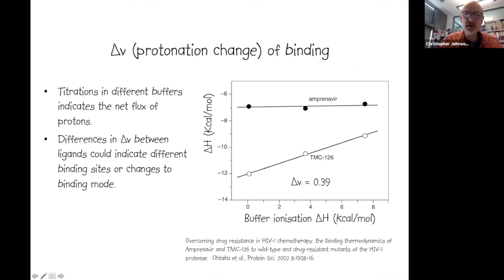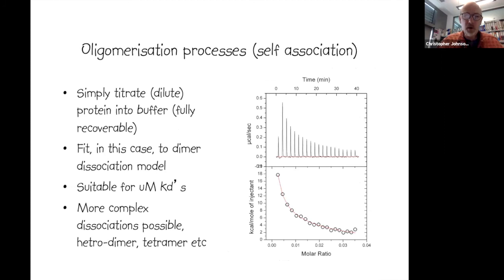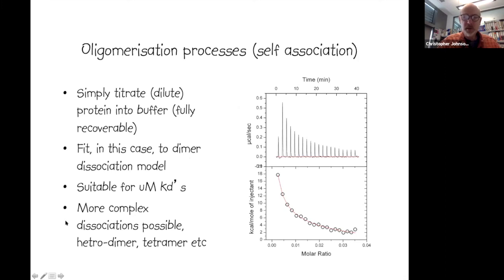We've already discussed measuring changes in protonation using calorimetry. ITC can also be used to look at homo-oligomerization via a dissociation process. To measure the Kd for dimerization — if the Kd is in the micromolar range — you put the dimer in the syringe and inject it into buffer. Rather than a fixed heat of dilution, you see decreasing amounts of dissociation of the injected dimer as the cell becomes more concentrated, and you can extend this to hetero-dimers or tetramers.